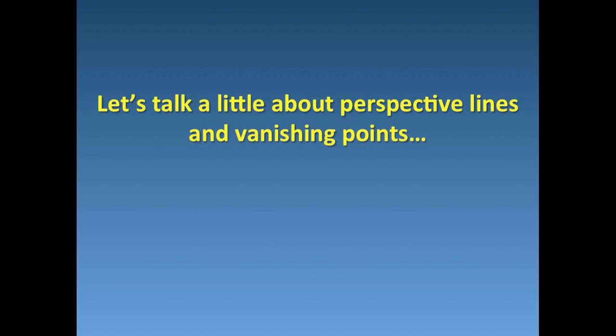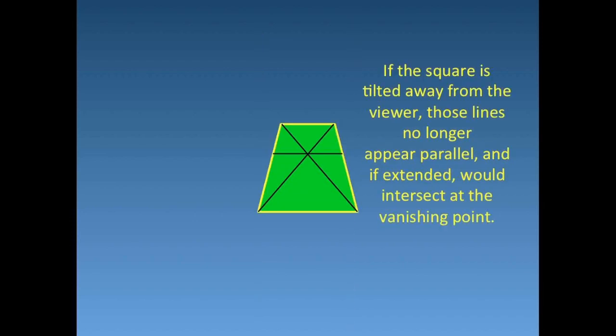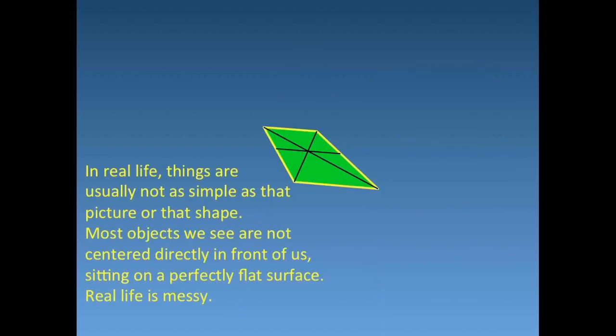So let's talk a little bit about perspective lines and vanishing points and how they work. Now, the lines on this square are parallel. If the square is tilted away from us, those lines no longer appear parallel. And if extended, would intersect at the vanishing point. In real life, things are not usually as simple as that picture or that shape. Most objects we see are not centered directly in front of us, sitting on a perfectly flat surface. Real life is kind of messy. The vanishing point isn't always going to be in a real convenient place for us if we want to draw a realistic picture.